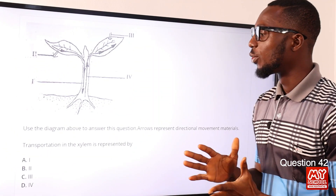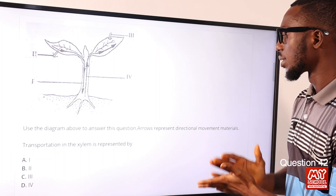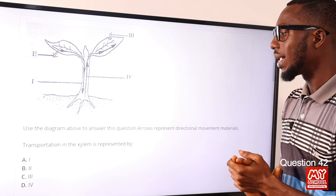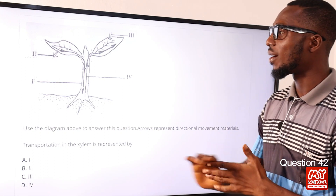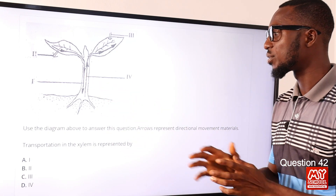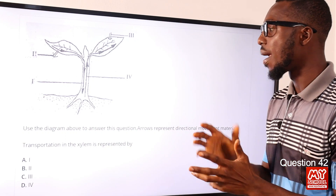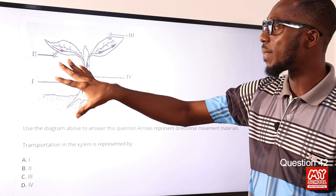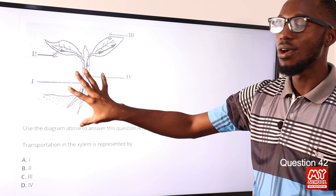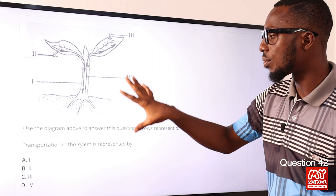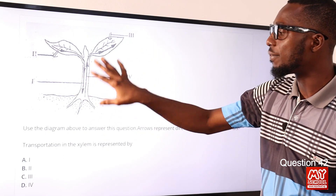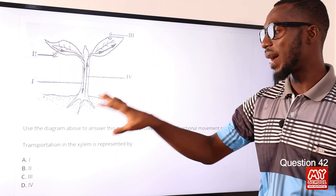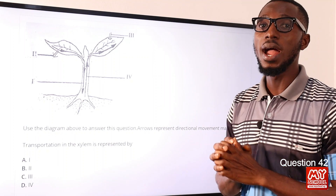Question 42. Use the diagram above to answer this question. Arrows represent directional movement of materials. Transportation in the xylem is represented by arrow IV. The xylem conducts mineral salts and water from the roots to the leaves and other parts of the plant, while the phloem conducts manufactured food from the leaves to the other parts. The correct part is labeled IV, showing directional movement of water and mineral salts upward. So the correct option is option D for IV.